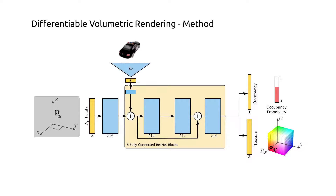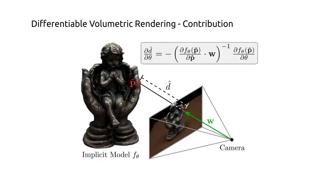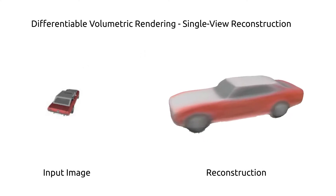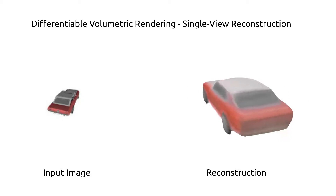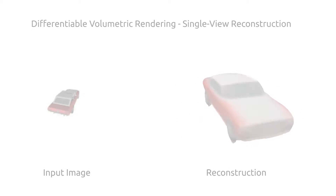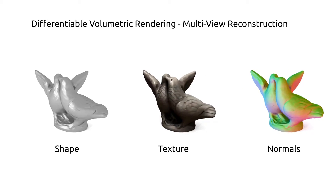For single-view reconstruction, we can further use an encoder network to condition our model on the input image. Our key contribution is to analytically derive a memory-efficient solution to learning implicit representations from only posed multi-view images as supervision. We can apply our method to both single-view reconstruction as well as multi-view reconstruction.